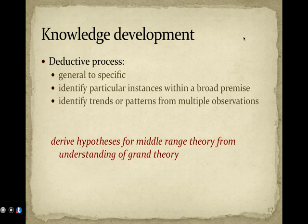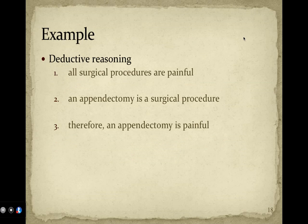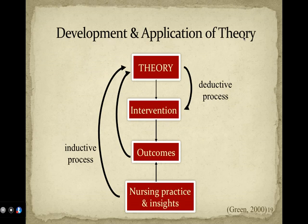The other way is the deductive process. We start with the general and move to the specific — we identify particular instances within a broad premise and then look at individual or specific trends or patterns from multiple observations. An example of deductive reasoning might be: all surgical procedures are painful; an appendectomy is a surgical procedure; therefore, an appendectomy is painful.